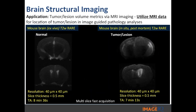In this case, the application was tumor lesion volumetrics. We used the MRI data to locate the tumor and help with image-guided pathology analyses. Here on the right is a multi-slice T2 RARE acquisition: normal brain scan on the left and the lesion on the right. We did higher resolution in X and Y with 0.5 millimeter slice thickness because we just needed to identify where the lesion was for the histopathology group. These scans took on the order of seven minutes — from a cost and time perspective, that is a very practical imaging session.